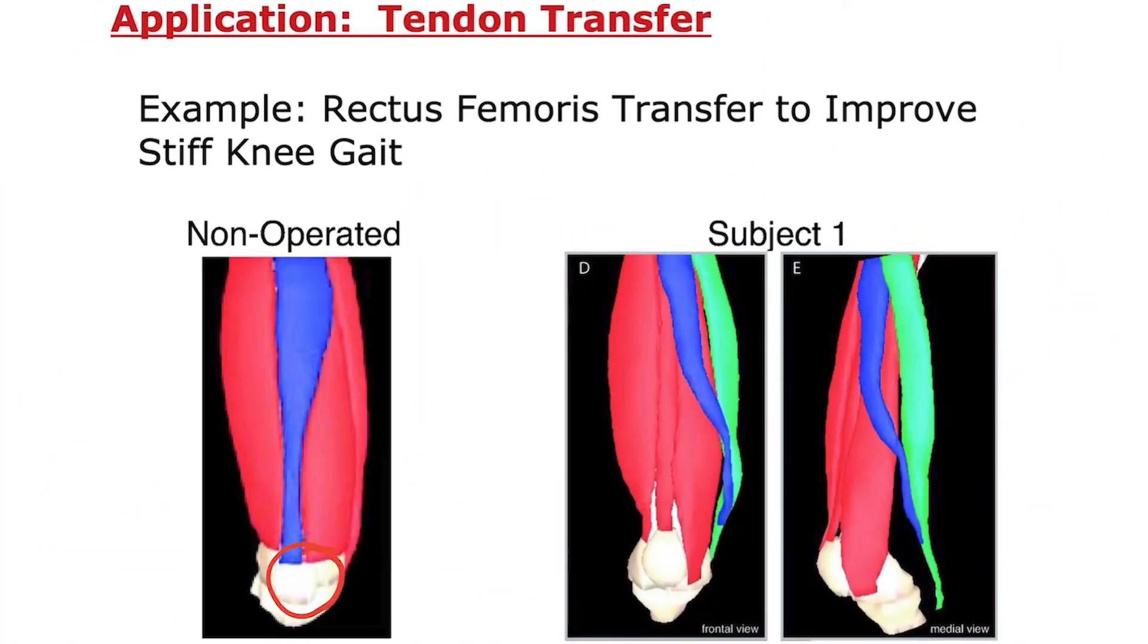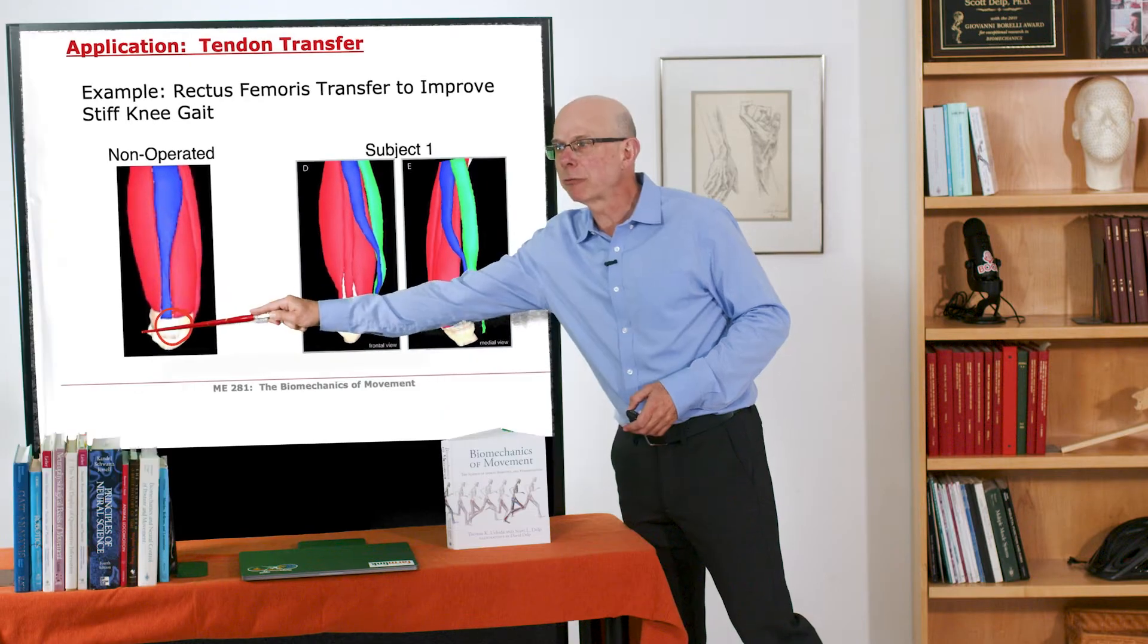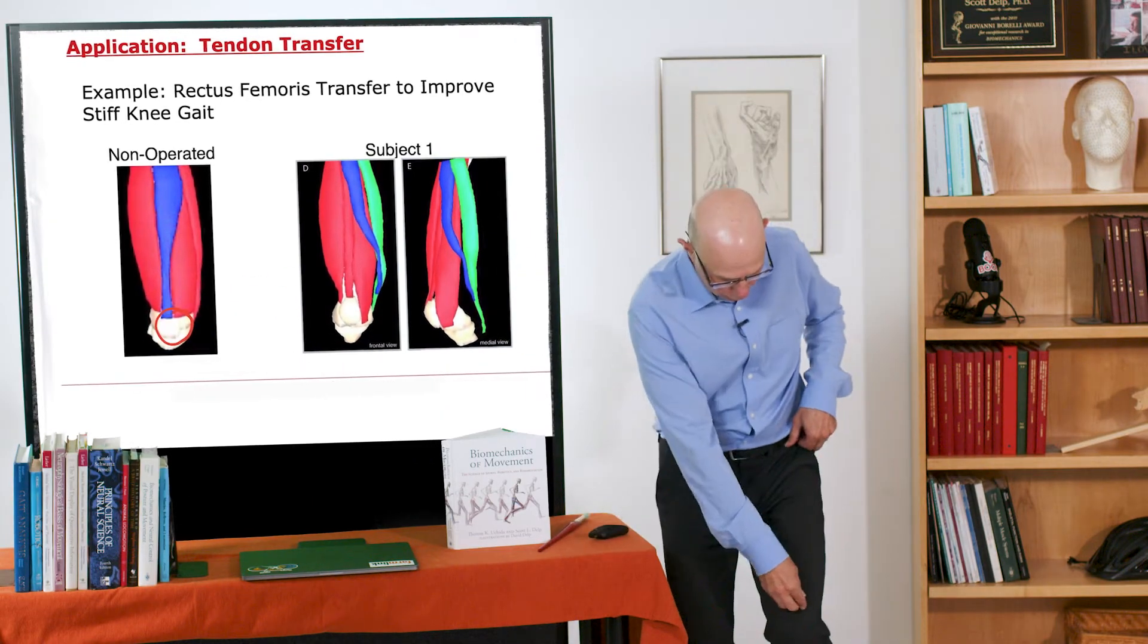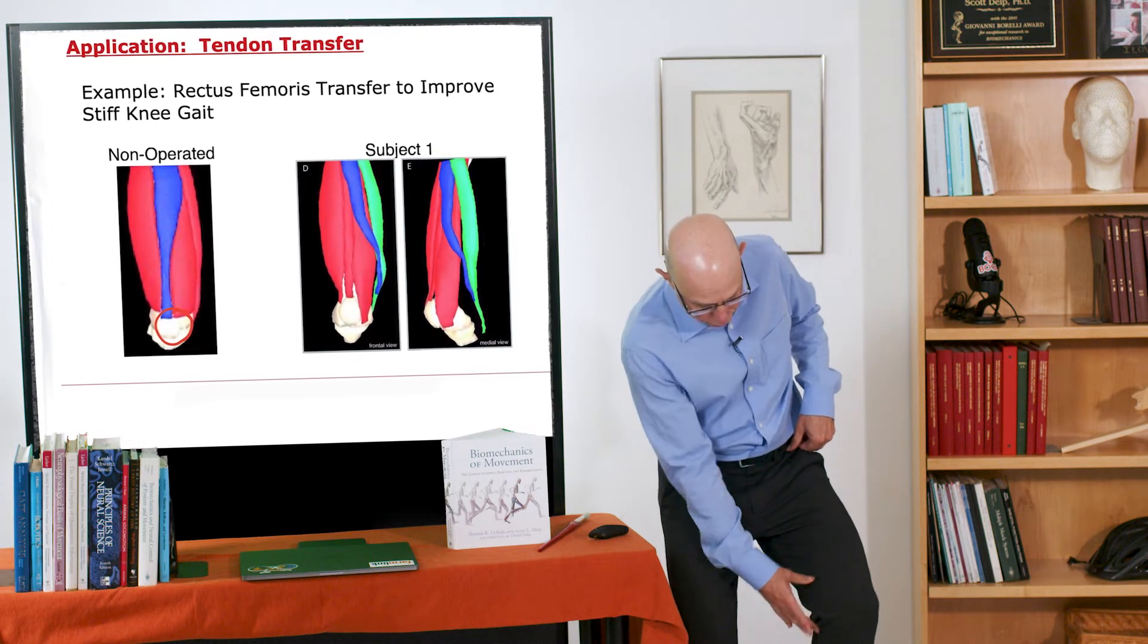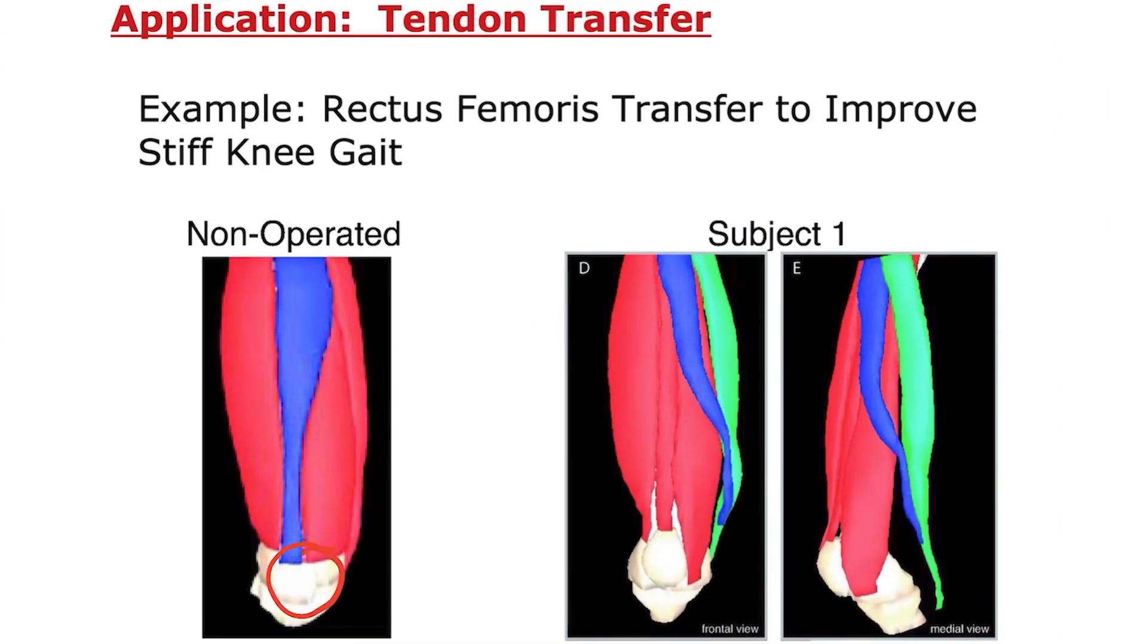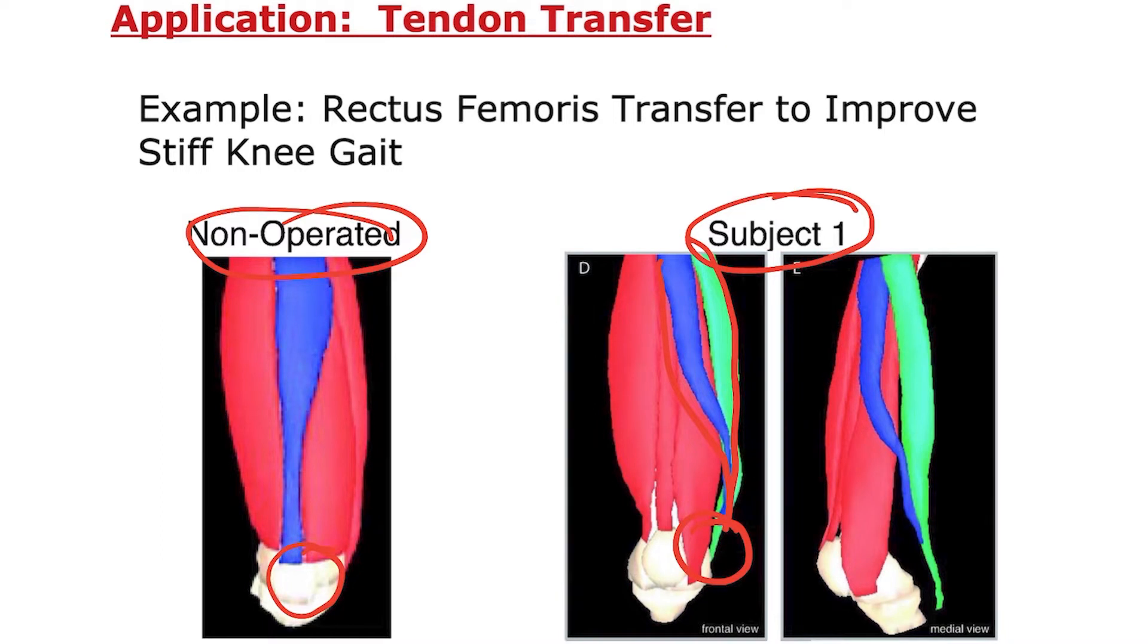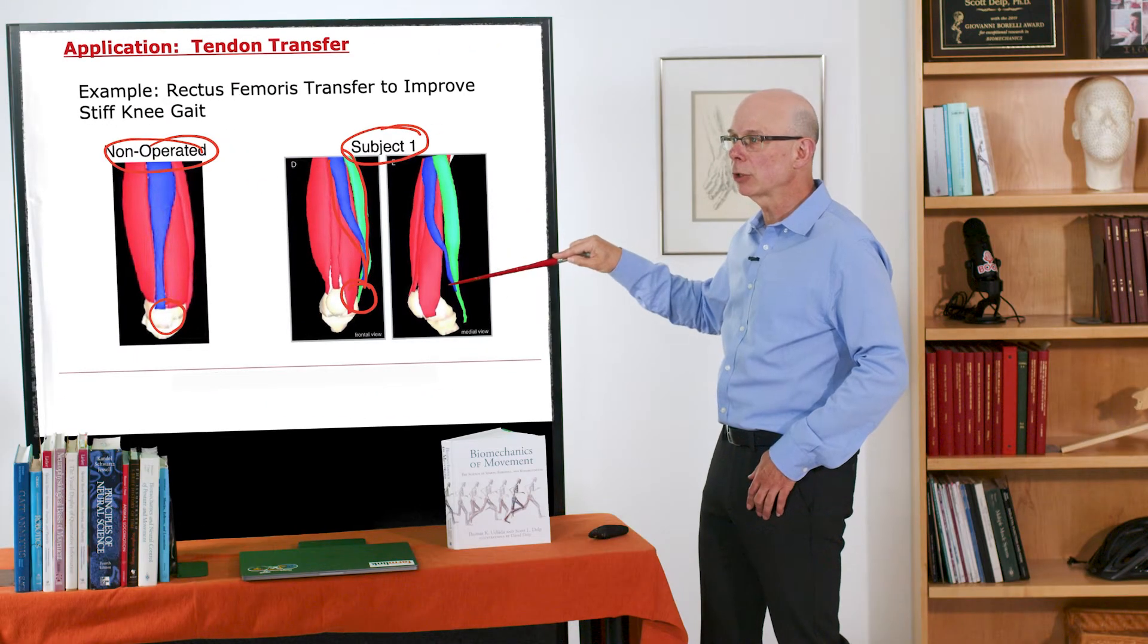So in this surgery the muscle is detached from the patella. Remember it's coming down and attaching to the kneecap. But here now it's detached from the patella and rerouted. So you can imagine it can be detached here. You free up the muscle and you can reroute it and attach it to say one of the hamstring muscles. And that's what's shown here. So we did some MRI studies. So here's the person on their non-operated side. And here they are after surgery. So here's the green is the sartorius muscle. And blue normally it would be coming down and attaching to the kneecap. But it's now sewn into the sartorius muscle. And here's a different view.